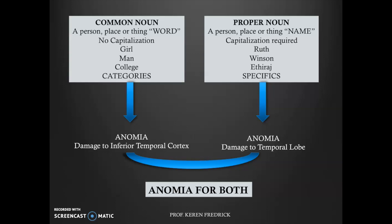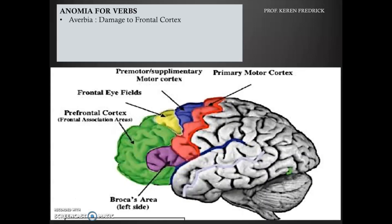Now we're going to look at anomia for verbs, which can better be explained as 'verbia.' Verbia is caused by damage to the frontal cortex. The frontal cortex is highlighted in this image that you see here with colors. The frontal cortex is involved in executive functions like planning and organization, which involves a lot of actions.